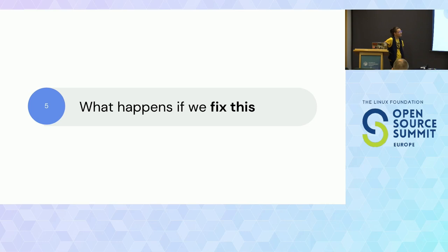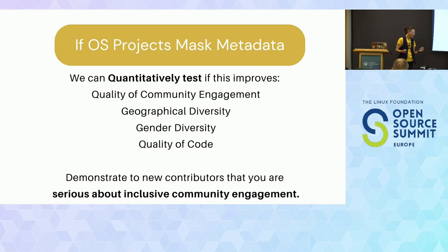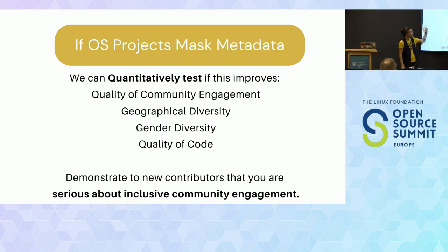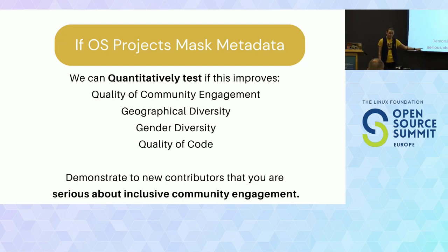What happens if we fix this? I want us to quantitatively test what it looks like to design these systems well. We all use GitHub — 85 percent of us do — but GitHub was not designed thinking about human cognition. As these systems get bigger, we need to be much better at designing them. If we can instantiate this on some major projects, we can do a pre and post evaluation. I would like to see improvement in the quality of community engagement, geographical diversity, gender diversity, and in the quality of code and mergeability. I suspect that we will see that. It also demonstrates to your community that you are serious about inclusive community engagement.